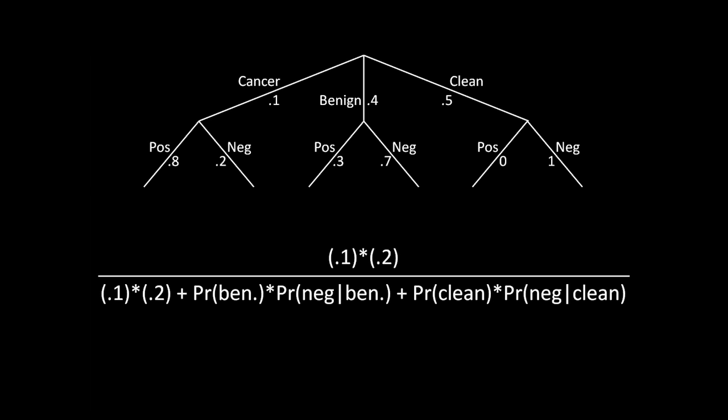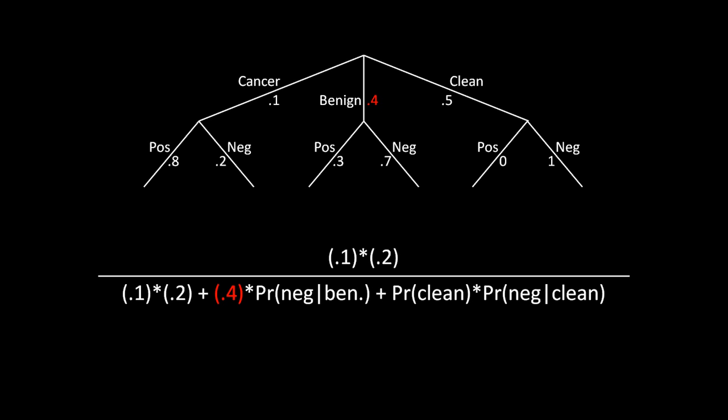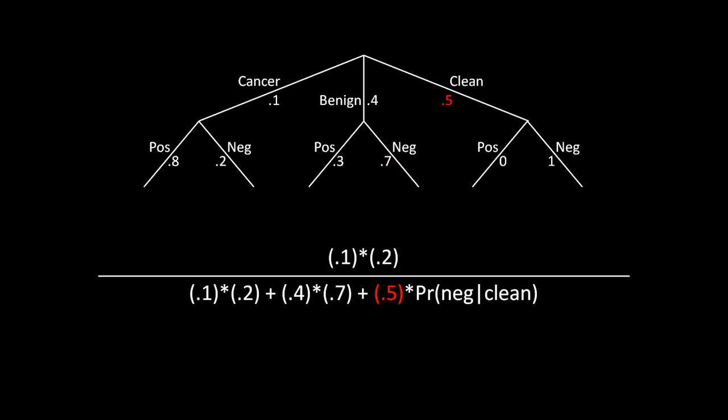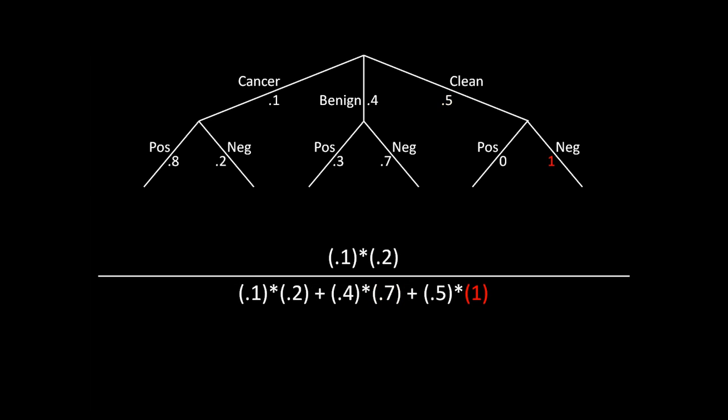If you have the tree in front of you, filling in the values is straightforward: the probability of a benign tumor is 40%, and the probability of getting a negative screening given that is 70%. The probability that you're clean is 50%, and the probability of a negative screen given that is 100%. Doing the math, you get 1 over 40. So if you get a negative result, you only have cancer 1 in every 40 times — much better than before.